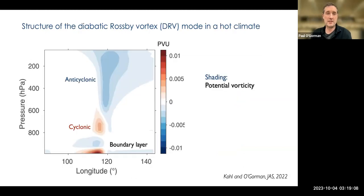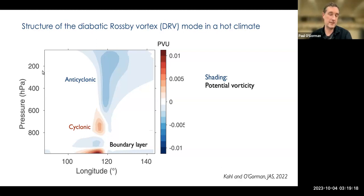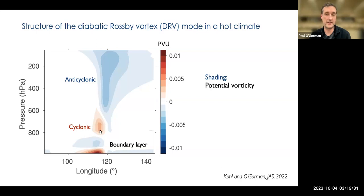We can look at our normal mode — the diabatic Rossby vortex in the hot climate. Shown here in shading is the potential vorticity versus longitude and pressure. The basic features are: a very large anticyclonic or negative PV in the middle and upper troposphere, and then cyclonic PV in the lower troposphere. There's also stuff going on in the boundary layer which may not be very realistic, so I won't discuss that as much.